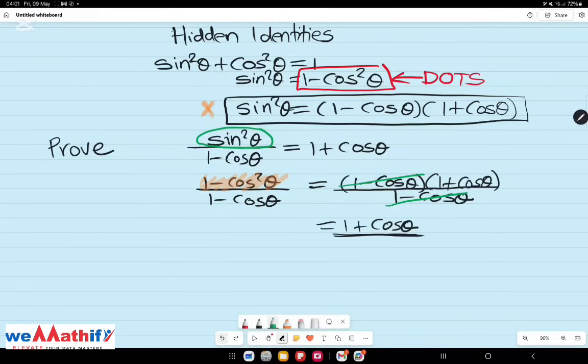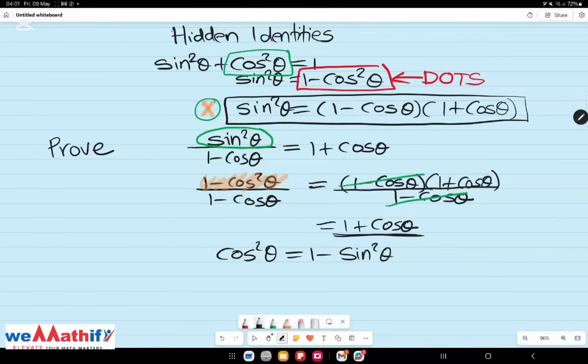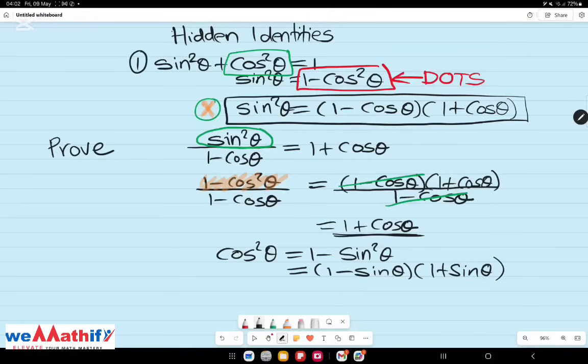remember, there is a similar version of this identity where we make cos squared theta the subject of the formula. And that would give us cos squared theta equals to 1 minus sine squared theta, which in turn can be factorized as a difference of two squares to give 1 minus sine theta, 1 plus sine theta. Moving on to the second hidden identity,